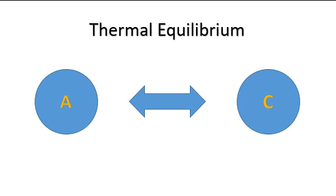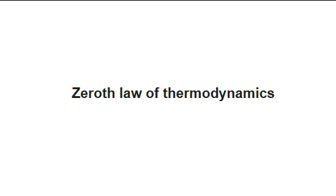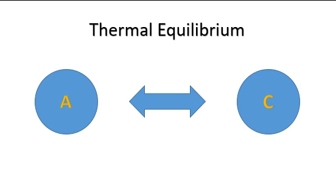Here you can see there are two bodies, body A and body C. Two bodies will be in thermal equilibrium if the temperature of both bodies is the same and there is no exchange of heat between them. You can see that the temperature of body A is T and the temperature of body C is also T.